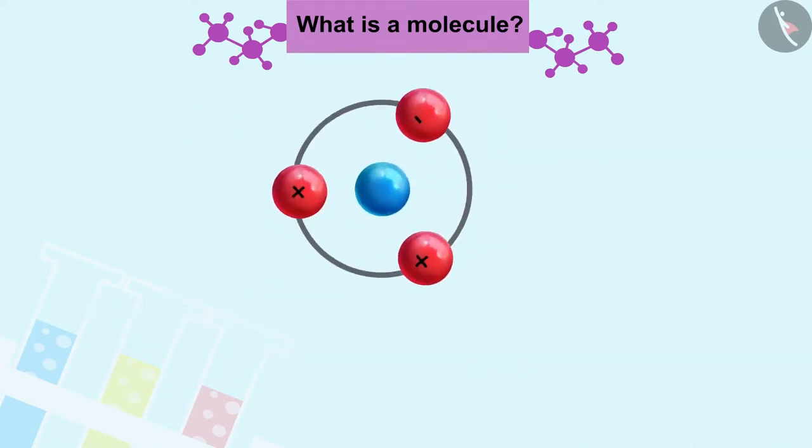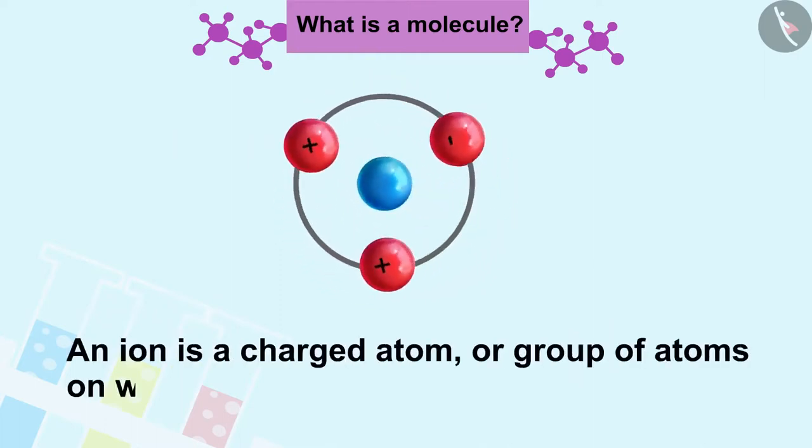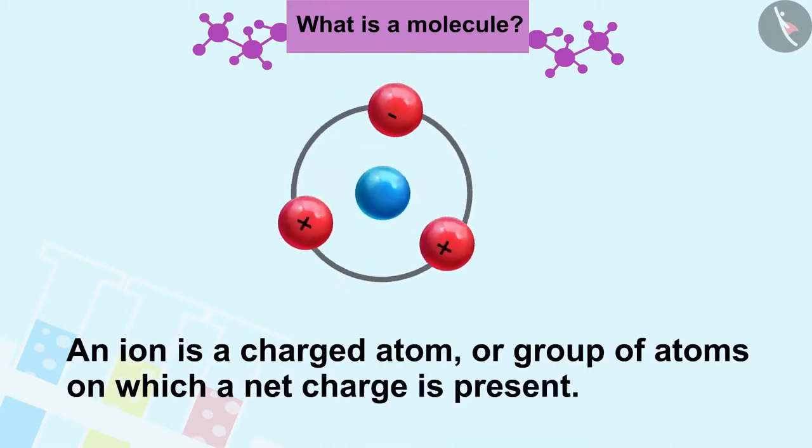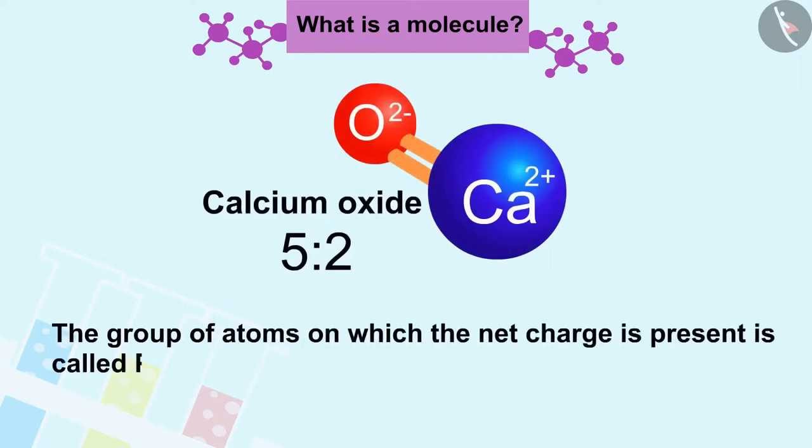An ion is a charged atom or group of atoms on which a net charge is present. The group of atoms on which the net charge is present is called polyatomic ion.